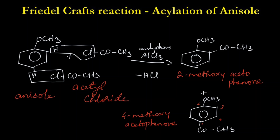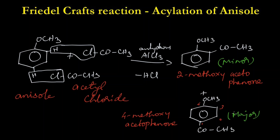The para isomer is the major product and the ortho isomer is the minor product. To summarize: when anisole reacts with acetyl chloride in the presence of anhydrous aluminum chloride, we get a mixture of two isomers — 2-methoxy acetophenone and 4-methoxy acetophenone — and the major product is 4-methoxy acetophenone.